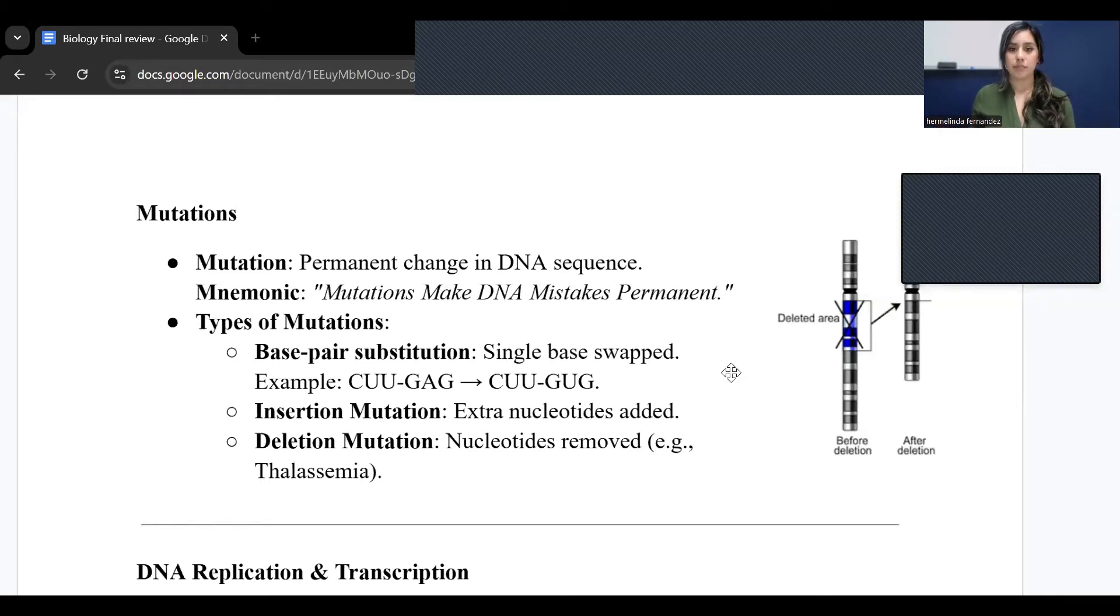There's three different types of mutations. The first one would be base pair substitution. Think of you're playing in a football field or you're playing soccer and they're making a sub. In this RNA strip, we are moving or we're swapping these base pairs. We have C-U-U-G-A-G and then we move it to C-U-U-G-U-G. So they have swapped out or they have subbed that A to a U. That is base pair substitution.